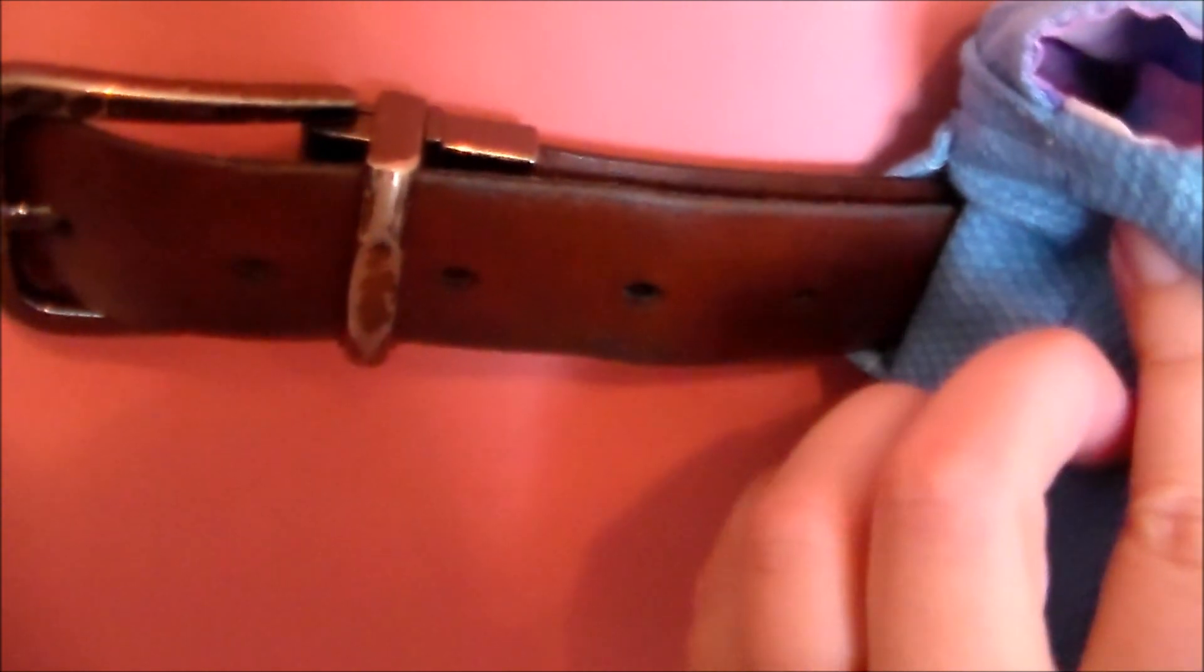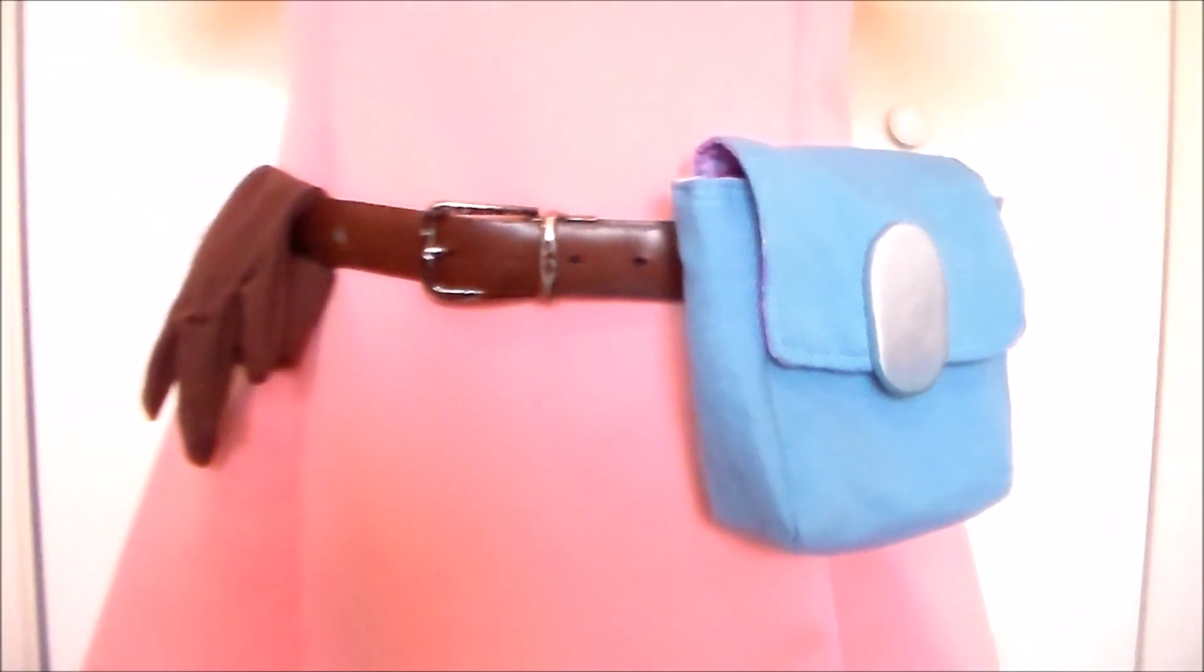Attach the fake clasp onto the pouch. I hand sewed it on but you could use glue as well. And then we're just going to slide the belt through the channel in the back. And with that, Bulma's pouch is done!